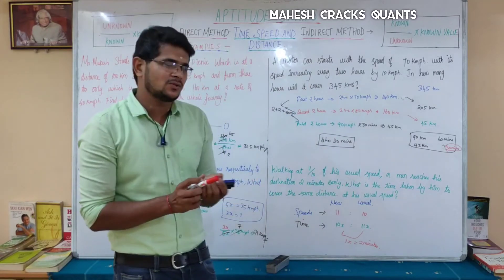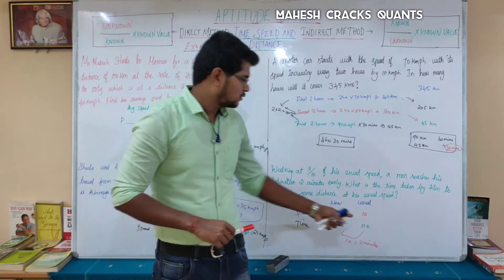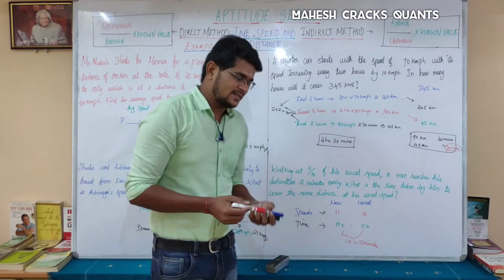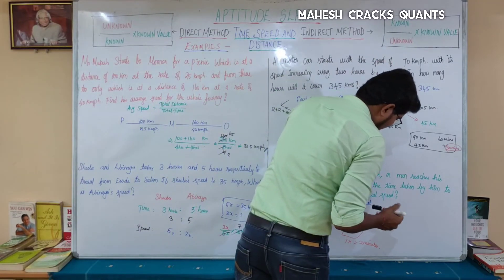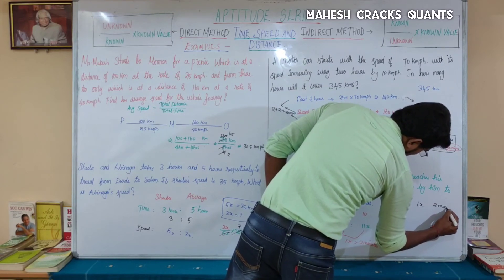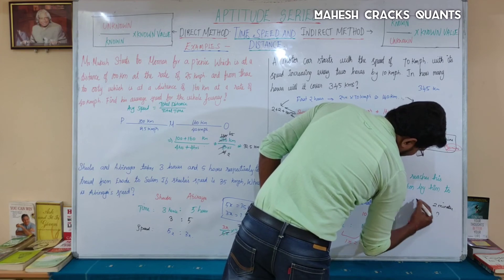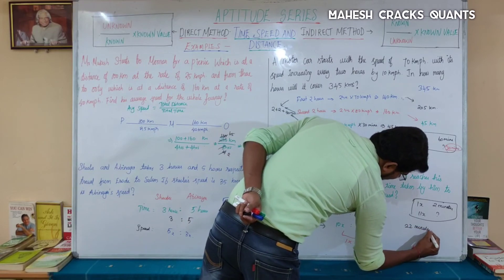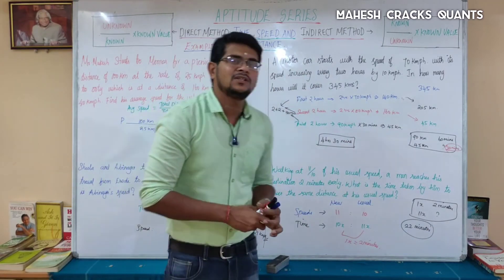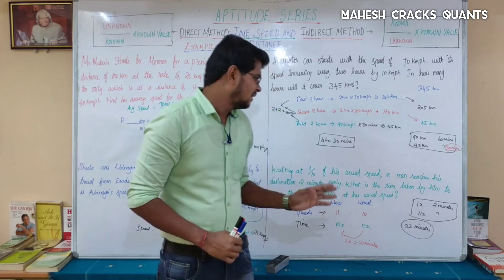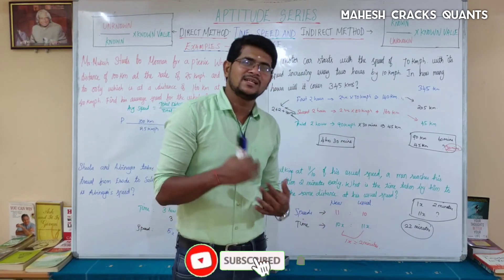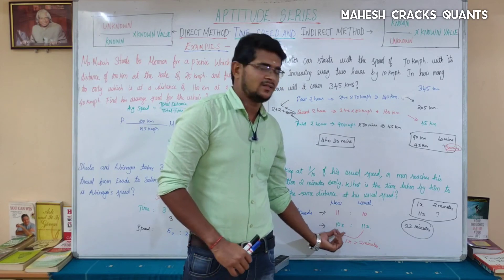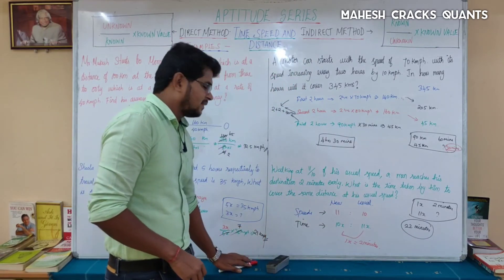Since 1x equals 2 minutes, the usual time is 11x equals 22 minutes. The new time is 10x equals 20 minutes. So at his usual speed he covers that distance in 22 minutes, and at the new speed he reaches in 20 minutes. That's all the examples.